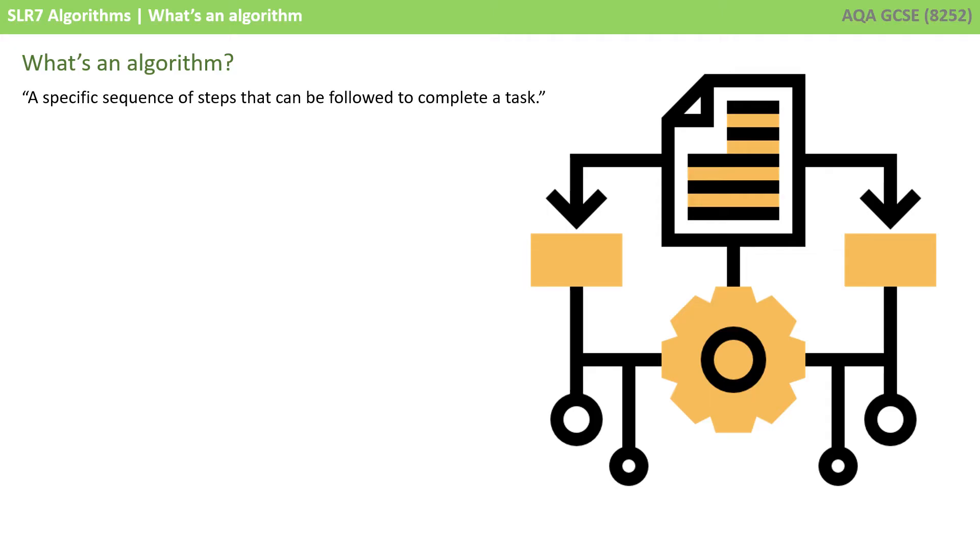Now, although you'll be learning about the term algorithm within the context of computer science, you carry out and complete algorithms every day as part of your natural life. That is to say, you complete specific sequences of steps that you can follow to complete given tasks.